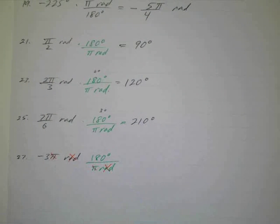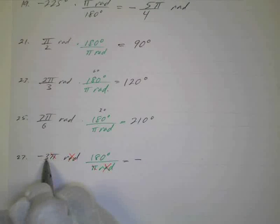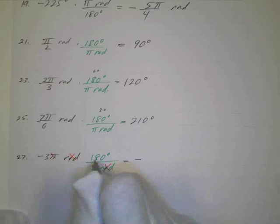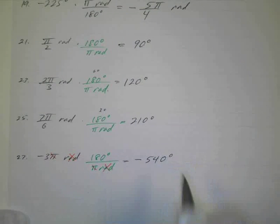So what's left is negative 3 times 180. So I've got negative... And 3 times 8 is 24, carry 2. 3 times 2 is 5. So that's 54 with a 0. Negative 540 degrees.